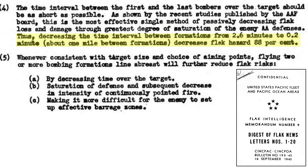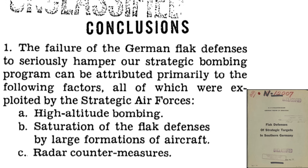Decreasing formation trail from 2.6 minutes to 0.2 minutes reduces the flak hazard by 88%. This page from a post-war 1945 AAF Evaluation Board document titled Flak Defenses of Strategic Targets in Southern Germany lists the three factors as to why German flak failed in stopping the bomber offensive: high altitude bombing of targets, saturation of flak defenses by large formations, and radar countermeasures.